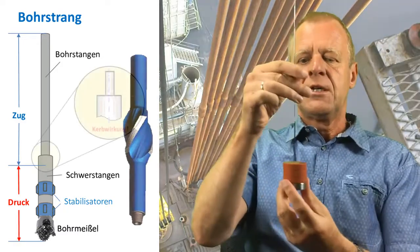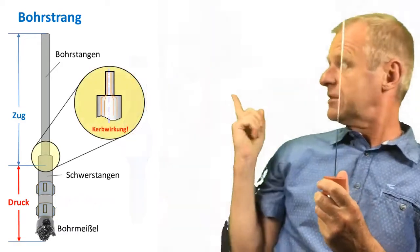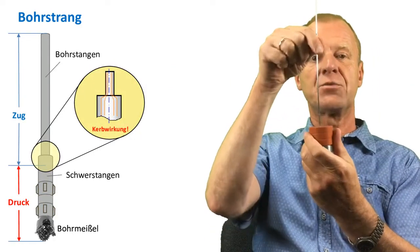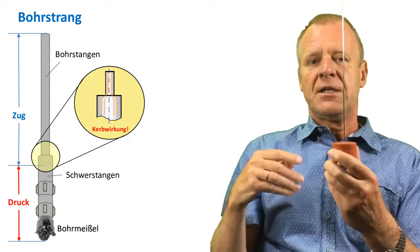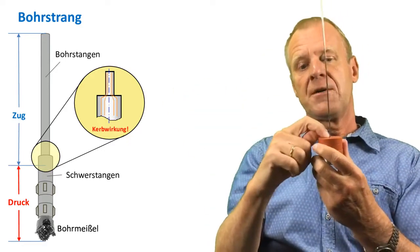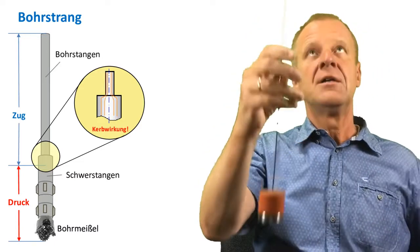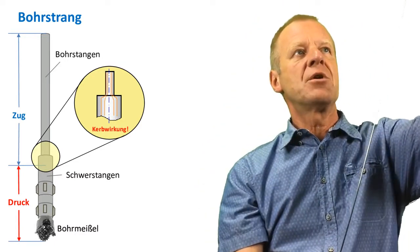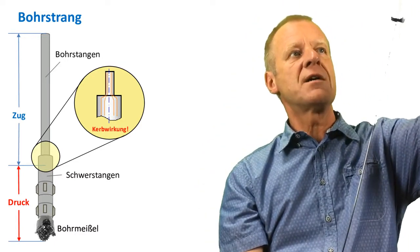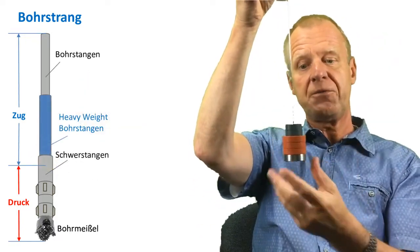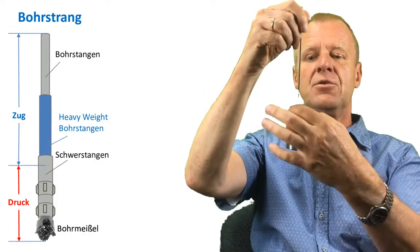We also know that the sudden change in diameter in the string components introduces a measure of stiffness and can become a breaking point in the string. This means that we need some form of transition in the drill string. Something that will not be as flexible as the drill pipe and not as stiff as the drill collars. So we introduce some new set of pipes and we call them the heavyweight drill pipes. You can see it.